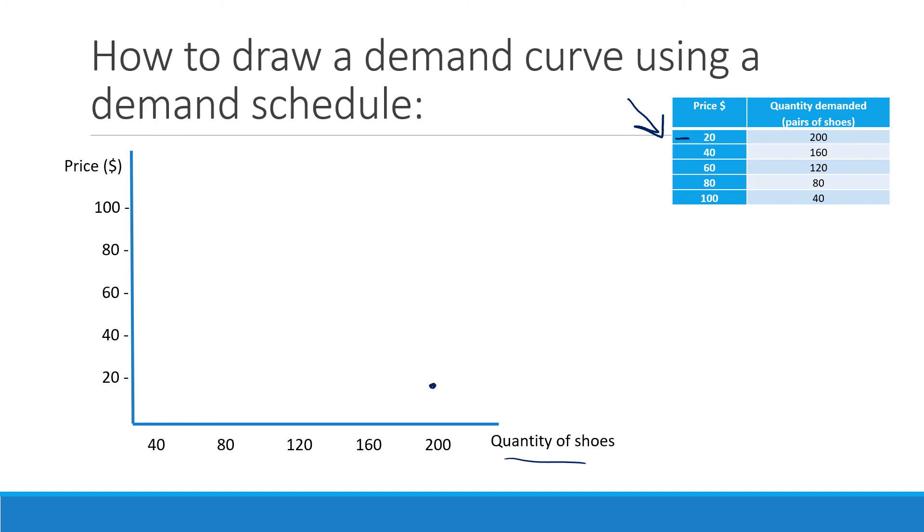Obviously, this isn't going to be perfect because I don't have grid paper and a ruler, but I will try my best. Then at $40, we have 160 demanded. So the price is $40, and we've got 160 demanded.